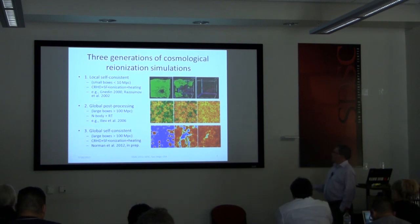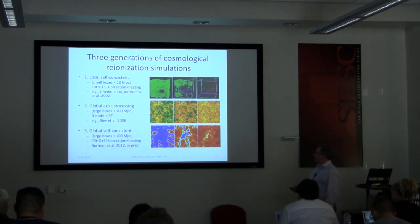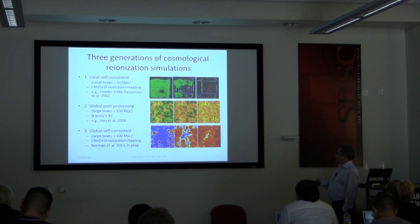So the second generation, and I would say this generation is still going strong, is what I call global post-processing simulations. Where you simulate large boxes, bigger than 100 megaparsec, co-moving. You simulate them with an n-body dark matter code. And then you post-process the results. And you see these lovely, so now this is 100 megaparsecs. This is 10 megaparsecs. So now the bubbles look 10 times smaller. And they eventually percolate and overlap.